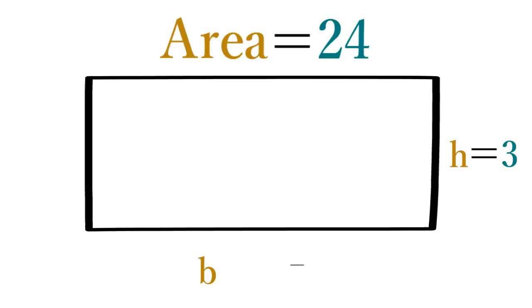When you know the area and the length of one side of a rectangle, you can find the length of the other side by dividing. For example, if a rectangle has an area of 24 and a height of 3, its base is 8 because 24 divided by 3 equals 8.